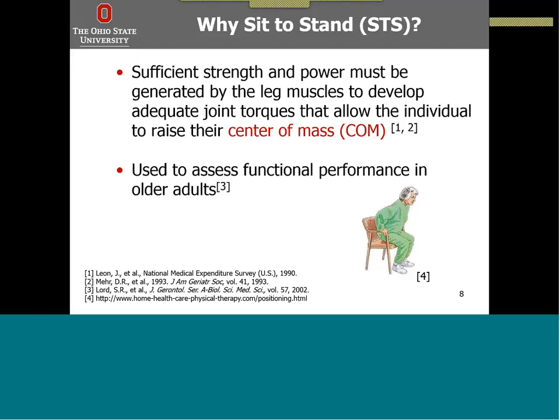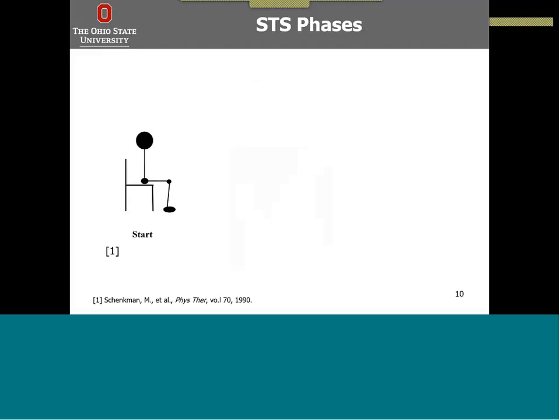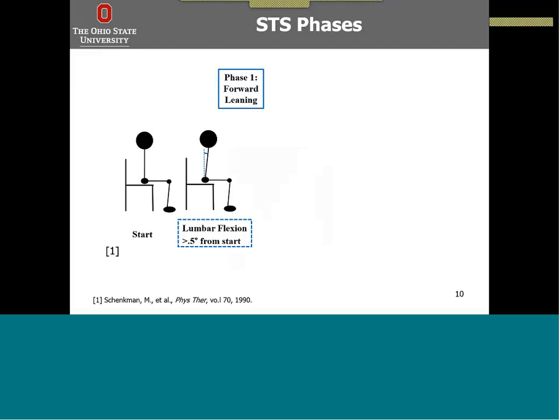In order to complete a sit-to-stand transfer, sufficient strength and power must be generated by the leg muscles to develop adequate joint torque that allows the individual to raise their center of mass over their base of support. Several studies have divided sit-to-stand into phases. Phase 1, the forward-leaning phase, begins when lumbar flexion increases from about half a degree from the beginning position — this is when you're leaning the torso forward. Phase 2, the momentum transfer phase, begins when maximum hip flexion is reached.